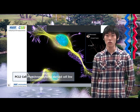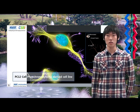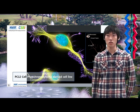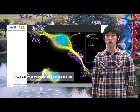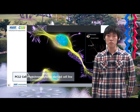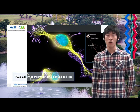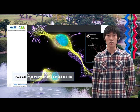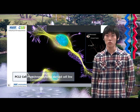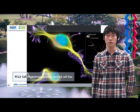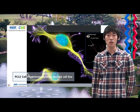In their normal undifferentiated state, PC12 cells exhibit the properties of a non-neuronal cell. However, if these cells are exposed to specific growth factors — namely NGF — they begin to change. Over the course of a week, the cells stop dividing, extend processes, and become electrically excitable. In other words, they differentiate into a neuronal-like cell type.